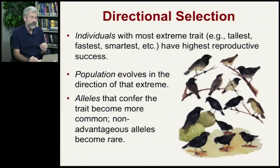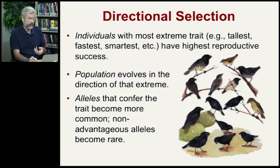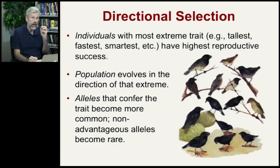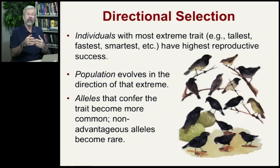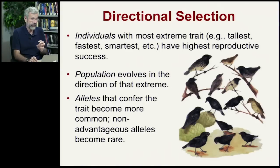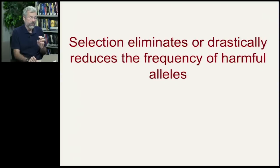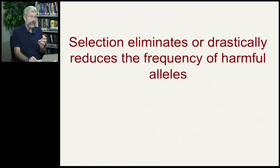What's happening is that alleles conferring the favored trait become more common. Every generation there will be more and more of that favorable allele in the population. Conversely, the alleles that were at a disadvantage are getting rarer and rarer — they're being crowded out by the very successful form. So selection eliminates or drastically reduces the frequency of harmful alleles.